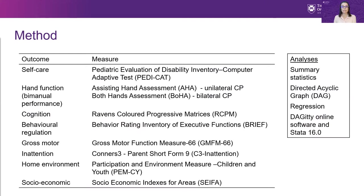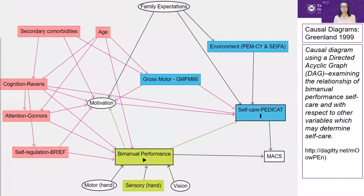In the analysis, linear regression was used to estimate the effect of bimanual performance on self-care. The selection of variables used in multiple regression modelling was guided using a directed acyclic graph, or DAG. A DAG is a type of causal model used to represent causal effects — a graphical model which summarises what is known and makes explicit what assumptions are being made. The DAG can also identify variables that must be adjusted for, which is important because studies have shown that unnecessary adjustment may introduce bias.